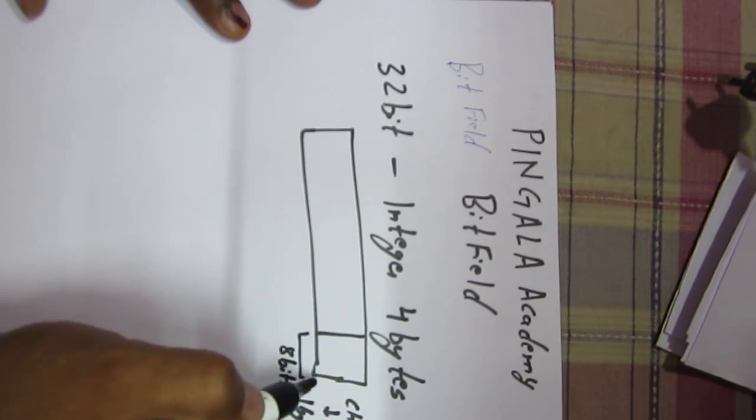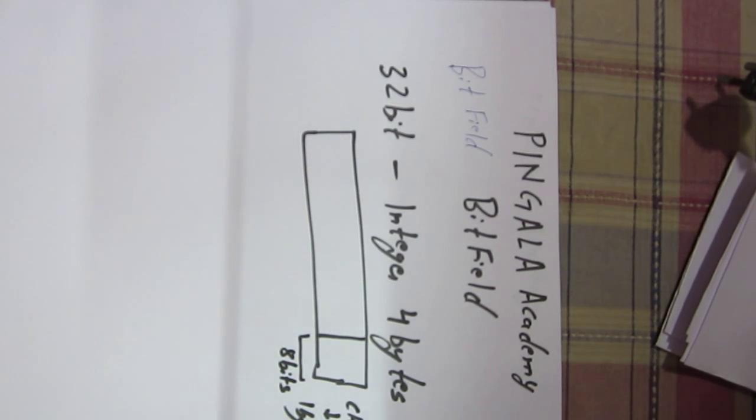What bit field does is that it actually packs small data. Suppose we need to store flags inside the memory of the computer. Storing flags will require only one bit, not the complete byte, so seven bits would be wasted.